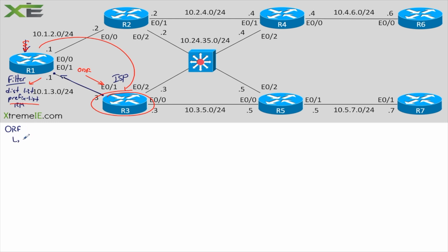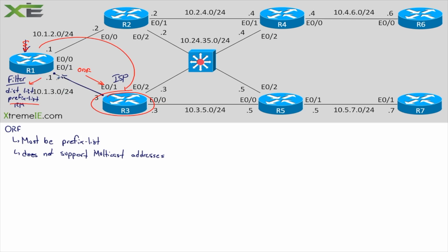There are some requirements. Number one: this must be a prefix list. We can't filter based on an ACL or any other type of filtering — it has to be a prefix list. If you're not comfortable with prefix lists, that's something you should work on. Also, ORF does not support multicast, meaning it does not support multicast addresses or prefixes like 224.x.x.x — it has to be regular IP packets.